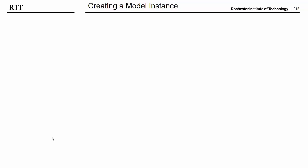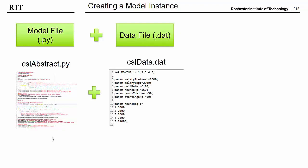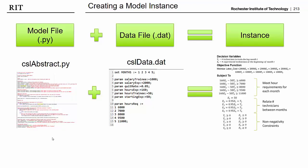So creating a model instance, let's look a little bit more into what that means. It basically means we have a model file, in our case that's csl-abstract.py, and we're going to combine that model file with our data file. So we have a data file that we've called csl-data.dat. And when we combine those, we're going to get a model instance. What a model instance is, is basically a concrete model. So it'll look very much to Pyomo like our concrete formulation of the CSL model, and we'll be able to see that in just a few minutes.